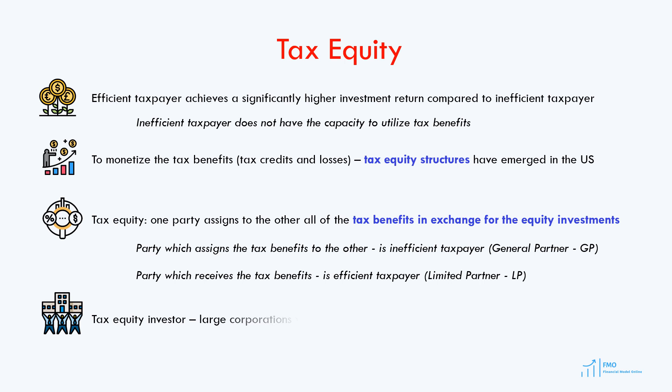Who is a typical tax equity investor? Tax equity investors are large corporations that have predictable tax liabilities. Usually these are large financial institutions such as Citigroup, JP Morgan, and Bank of America. The tax equity investor is not interested in the renewable project itself — he invests only to take advantage of the tax benefits that the project generates.